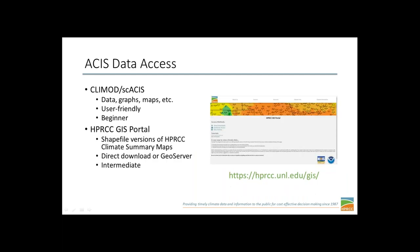You can also interact with ACIS on other levels. We have data available in GIS formats. For instance, you can download shapefile versions of the HPRCC's climate summary maps so that you can make custom maps for your own region or sector. I'd say this is at an intermediate level — not that it's hard, but you do need knowledge of GIS software, whether you're using ArcGIS or QGIS, in order to make this work.